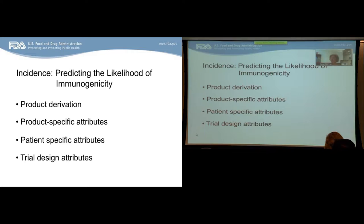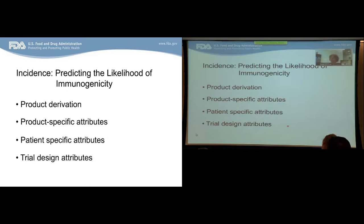There are a number of components that go into predicting the likelihood of anti-drug antibodies occurring. These include product derivation — whether the product has an endogenous human counterpart or is foreign to humans — product-specific attributes such as glycosylation and oxidation, patient-specific attributes such as immune status, age, gender, genetics of the patient and their disease, and trial design-specific attributes, which I'll go into a bit more later.